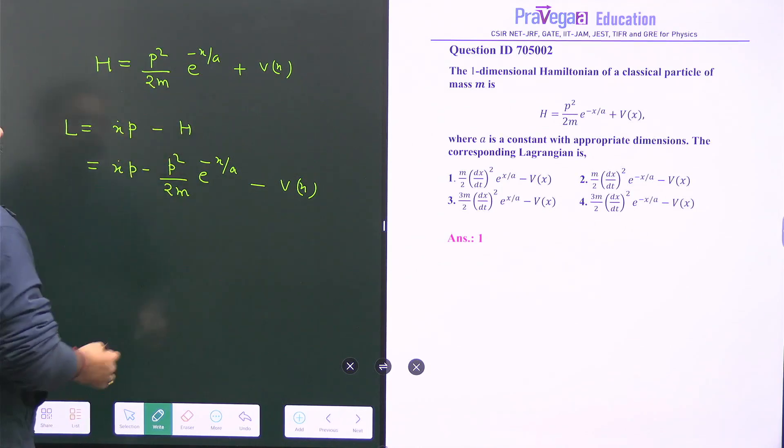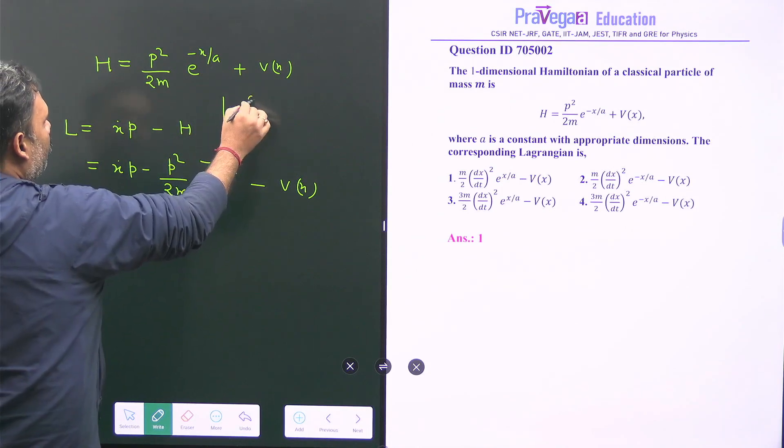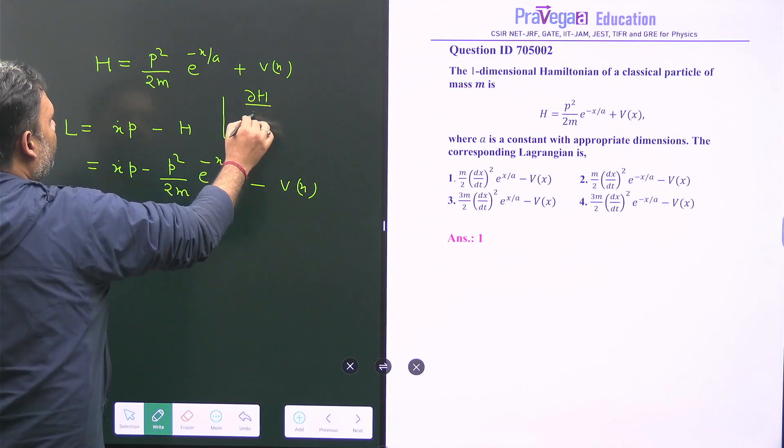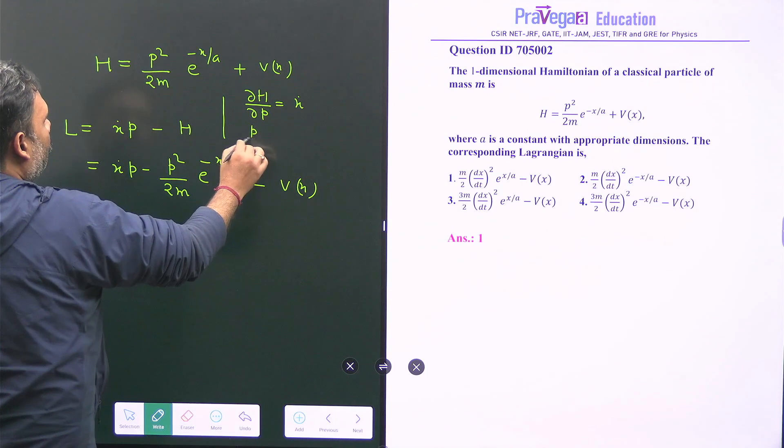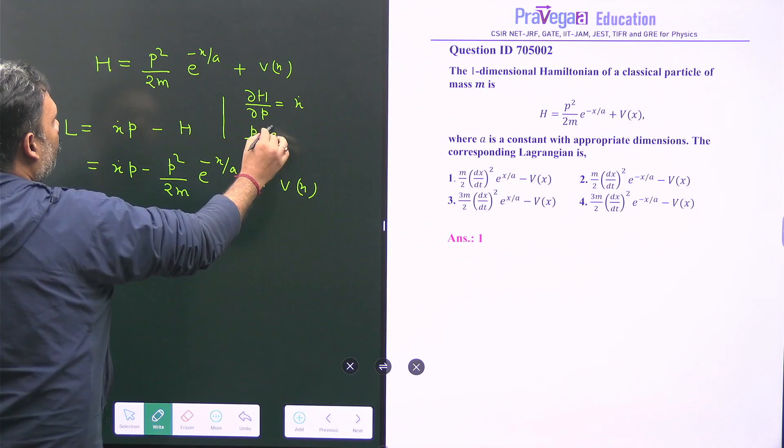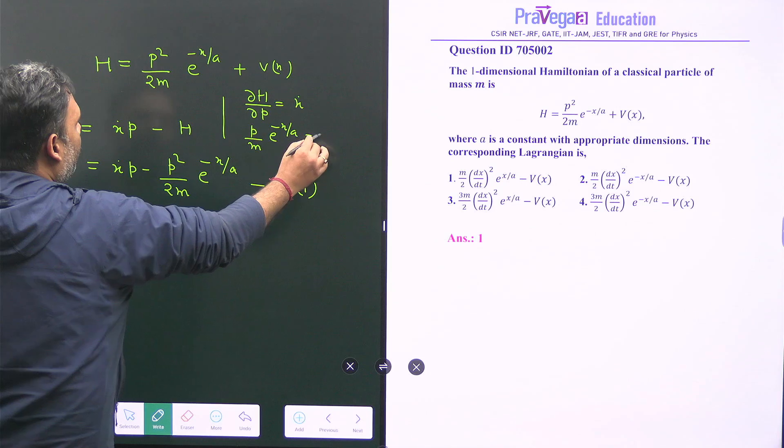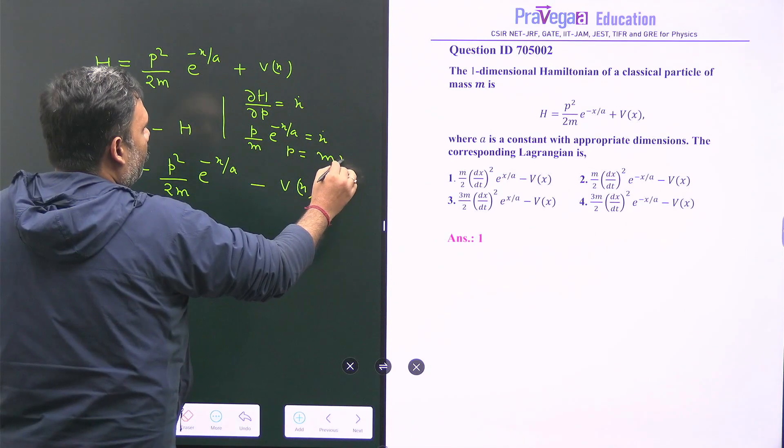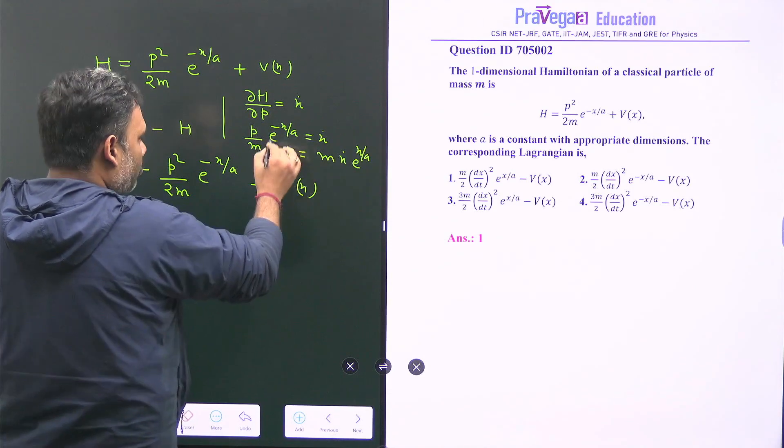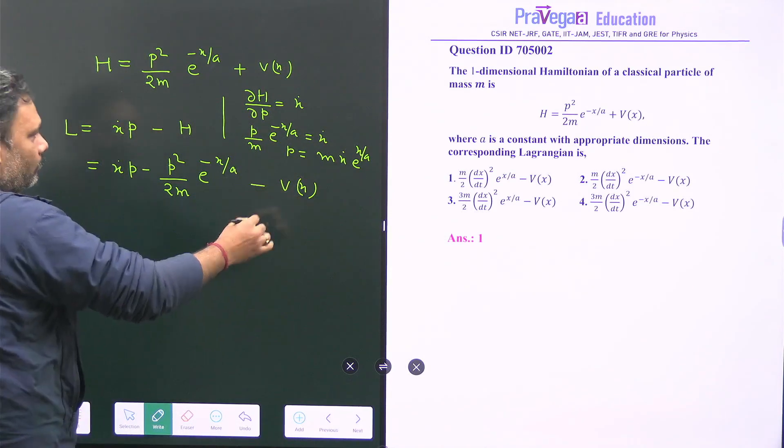So for that we have to go for Hamiltonian equation of motion and that is del H upon del p is equal to x dot. We have p upon m e to the power minus x upon a is equal to x dot. So p is equal to m x dot e to the power x upon a. So this is my p.